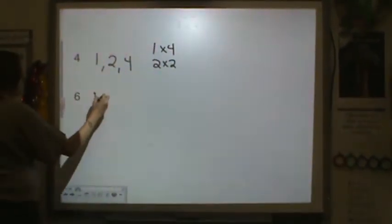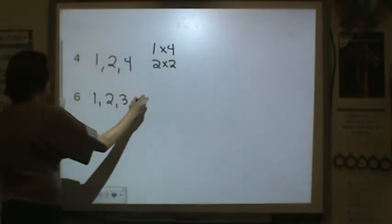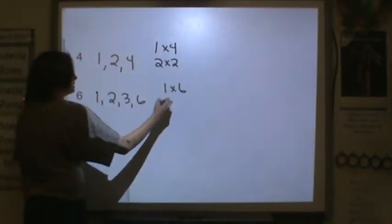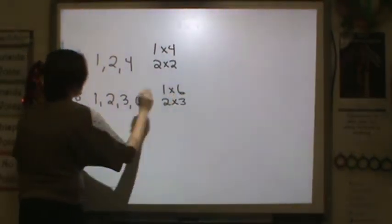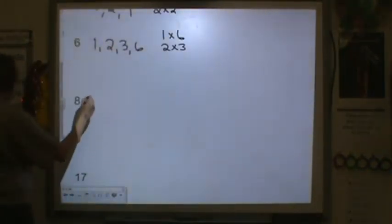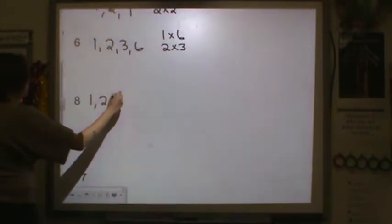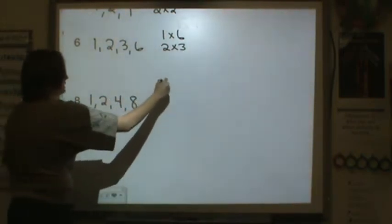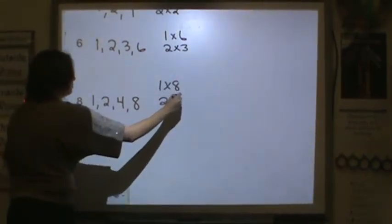Factors of 6. I have 1, 2, 3, and 6. I've got 1 times 6 and 2 times 3 for my factors. 8. I have 1, 2, 4, and 8. 1 times 8 and 2 times 4.